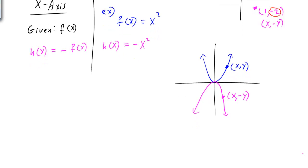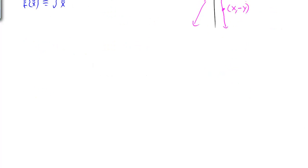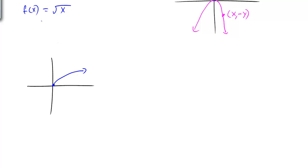We can do the same thing with another example. Let's say f(x) = √x. The square root function starts at the origin as half of a parabola on its side. If we want its reflection, h(x) puts a negative in front of the entire function, and the graph goes below the x-axis — creating the reflection in the x-axis.